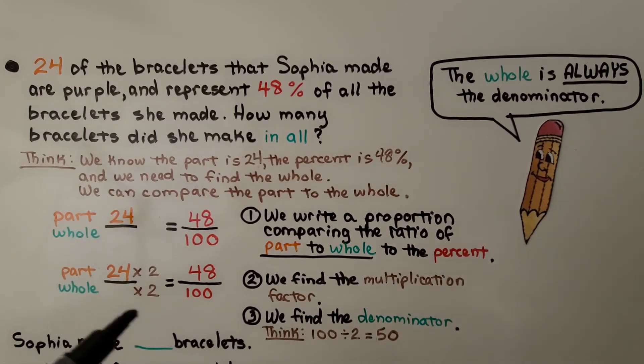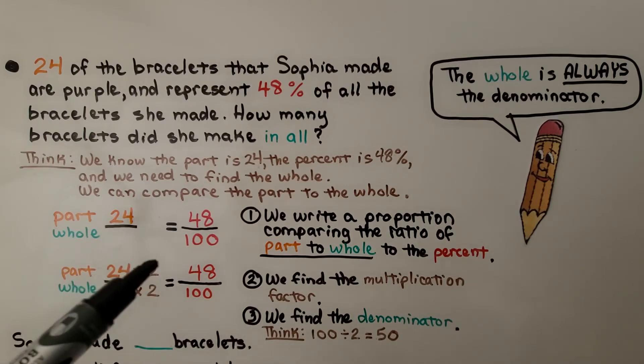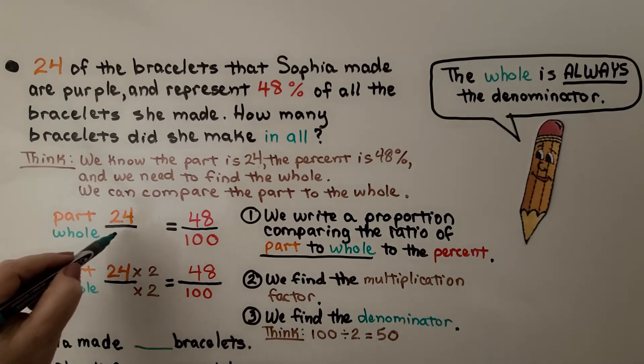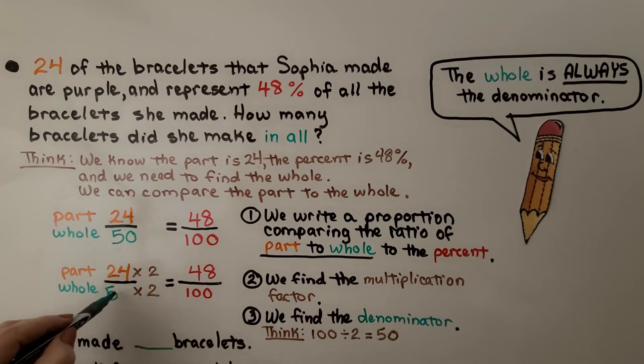We find the multiplication factor. 24 times some number is 48. Well, that would be times 2. We're going to multiply the denominator times 2 to equal 100. And we find the denominator. We think: well, 100 divided by 2 is 50. This must be a 50 right here. That means Sophia made 50 bracelets.